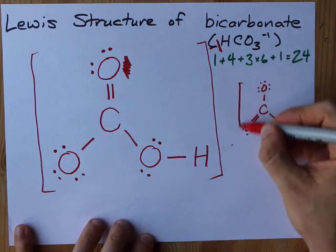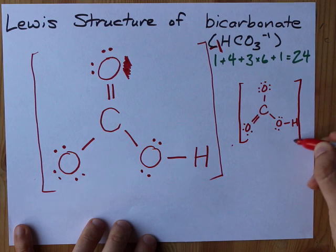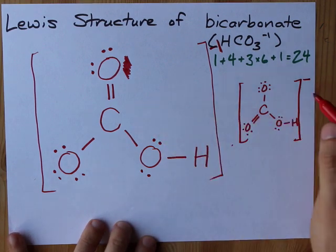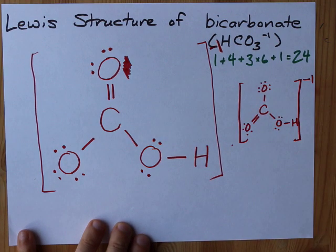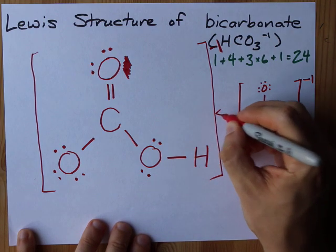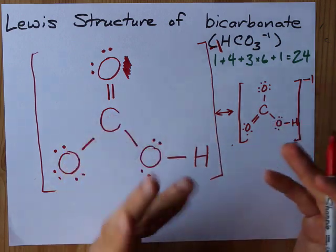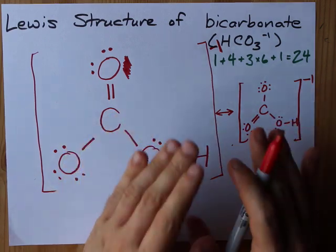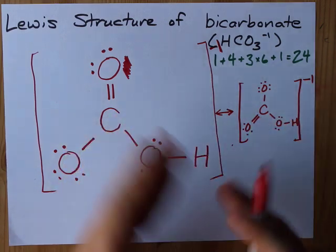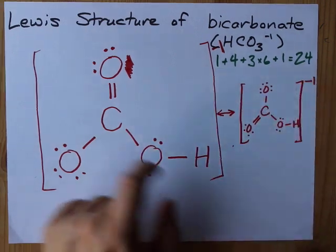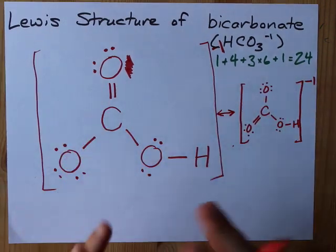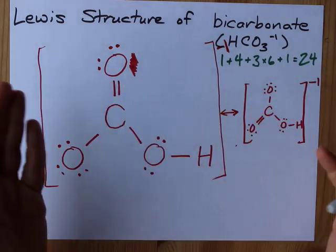In any case, you probably have to draw both of these resonance structures. They both go in square brackets, they both have this little minus one written on them, and you draw the resonance arrow to show that they are equivalent. Well, not equivalent, but they both contribute to the actual structure. The actual structure is not single double, double single. The actual structure is one and a half for all of those.